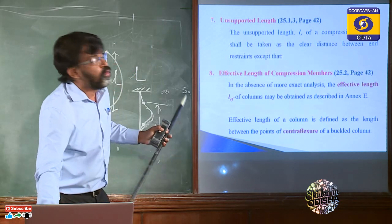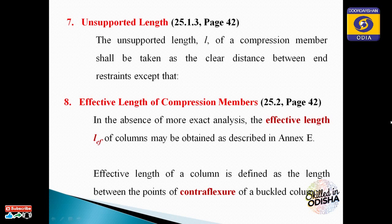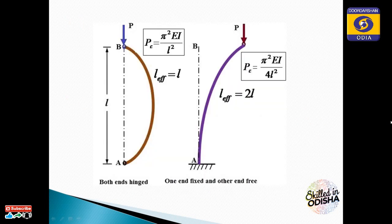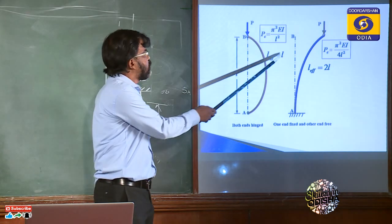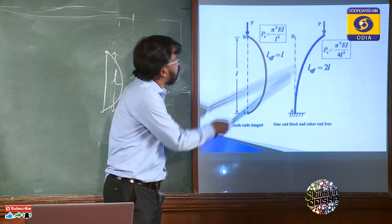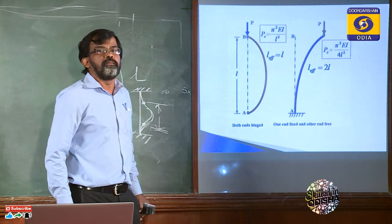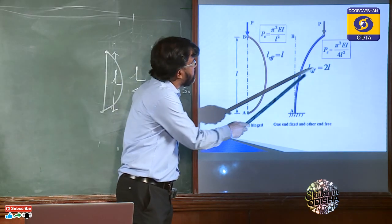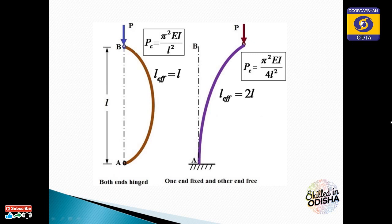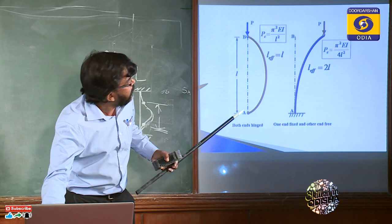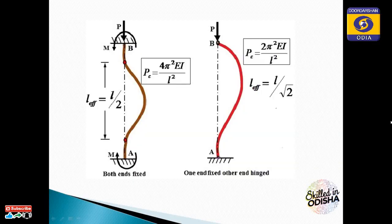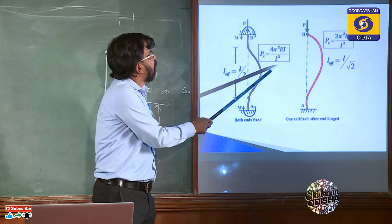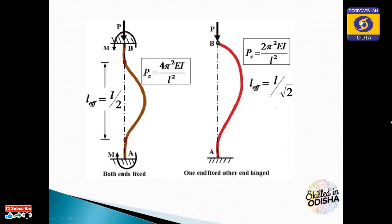For a column with both ends hinged, the effective length equals L and the buckling load is π²EI/L². For a fixed-free (cantilever) column, the effective length is 2L. For both ends fixed, the buckling load is 4π²EI/L² and the effective length is L/2. For one end fixed and one end hinged, the effective length is L/√2.